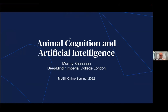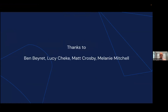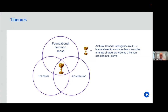Thank you very much for the invitation. Rather than a slide listing what I'm going to talk about, I thought I'd present a Venn diagram of themes. I'm not quite sure what the natural conceptual order of these themes is, but I'm convinced they intertwine in important ways. The three themes are foundational common sense, transfer — as in transfer learning — and abstraction.